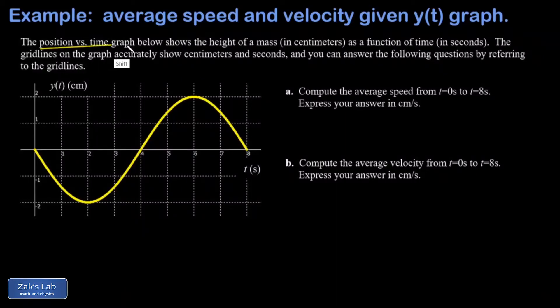In this video, we're given a position versus time graph for some oscillating object. I can see that at t equals zero, it starts at the origin, goes down for a while, slows down, and returns back through the origin. It goes above the origin all the way to this maximum height of two centimeters, and then back to the origin again by the time we get to t equals eight seconds. We're asked two different questions.